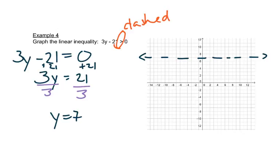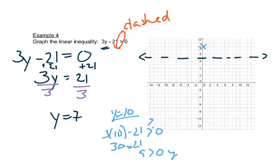So now we need to shade it. So we go back here, and we just need, there's only a y in the equation, so we just need a y to check. So let's check 10. So if we have 3 times 10 minus 21, we're asking ourselves, is that greater than 0? 3 times 10 is 30, minus 21 is 9, and 9 is greater than 0. So because that point works, every point up here will work. We want to shade where that point was.